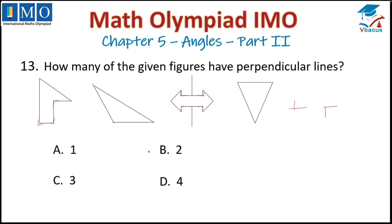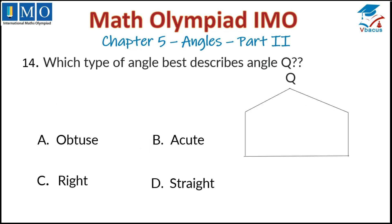Question number 14: Which type of angle best describes angle Q? This is angle Q — it is more than 90 degrees, which means it is an obtuse angle. That is in option A, so option A is correct.